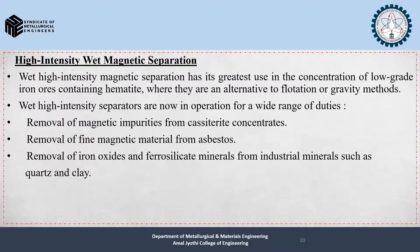High intensity wet magnetic separation has its greatest use in the concentration of low-grade iron ores containing hematite, where it is an alternative to flotation or gravity methods. Wet high intensity separators are now in operation for a wide range of duties: removal of magnetic impurities from cassiterite concentrates, removal of fine magnetic materials from ores, and removal of iron oxides and ferrosilicate materials from industrial minerals such as quartz and clay.